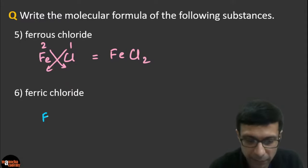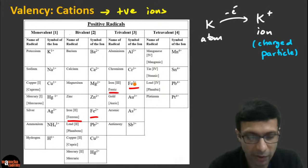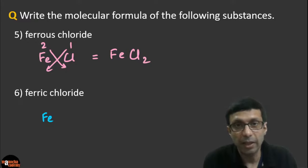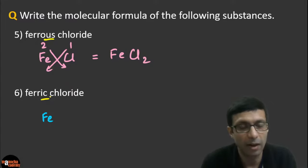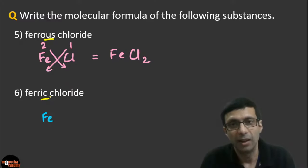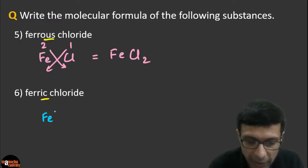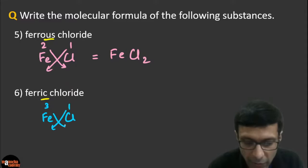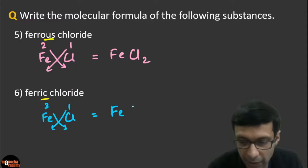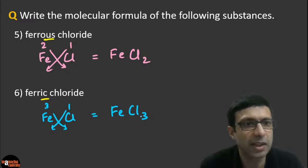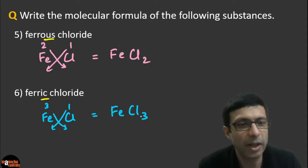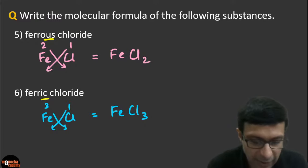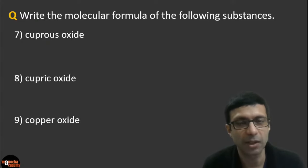FeCl₃ is ferric chloride. Please learn your valency and these symbols. Next: cuprous oxide. Cuprous is basically copper. Oxygen is oxide. Valency of oxygen is two. Copper has two valencies — you can see copper one, which is cuprous, and cupric is copper two. So cuprous means valency one — 'us' means lower valency, 'ic' means higher valency. Cuprous oxide means valency one. Now do the crisscross — exchange the numbers. Copper gets two, oxygen gets one. So we don't write one, and the answer is Cu₂O — not CuO₂, it is Cu₂O. Because you exchange the valency numbers.